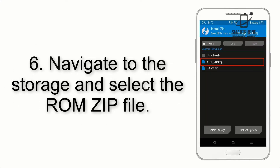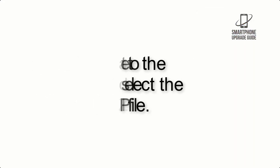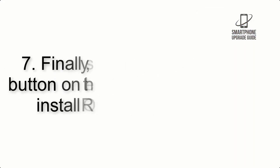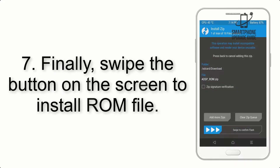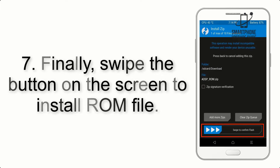Step 6: Navigate to the storage and select the ROM zip file. Step 7: Finally, swipe the button on the screen to install the ROM file.